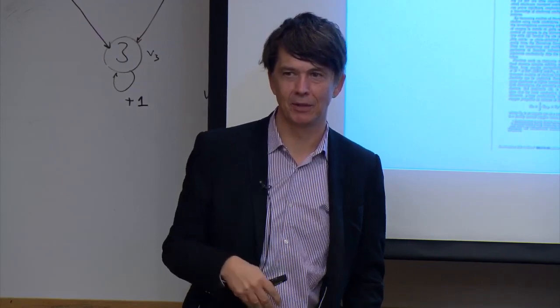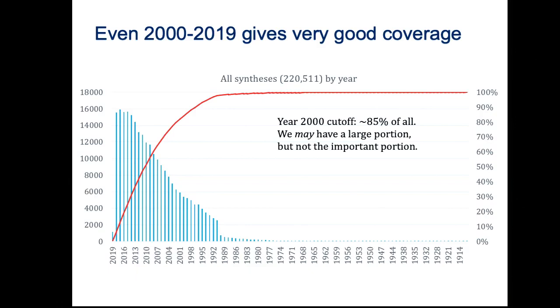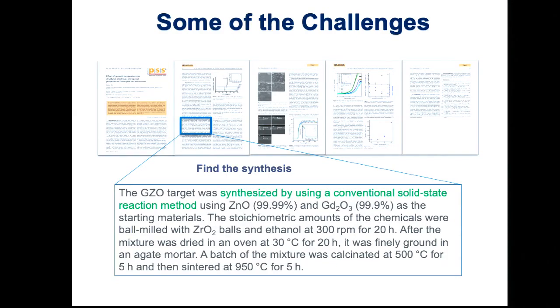So how complete are we? This is a histogram of papers mentioning synthesis, as a function of time. The shocking thing about this graph is that the world has gotten more competitive — there are just a lot more papers being published every year. If we cut off at 2000, we probably have 70 or 80% of all papers ever published, which is kind of crazy. The question is whether we have the important ones, which is not the same question.